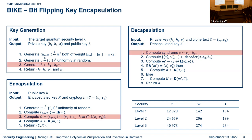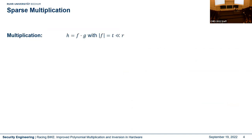In each algorithm we use a polynomial multiplication, and in each multiplication we have at least one sparse polynomial. In the key generation, h1 is the sparse polynomial; in the encapsulation, e1 is the sparse polynomial; and in the decapsulation, h0 is the sparse polynomial. We try to utilize the sparseness and implement a specific sparse multiplier.